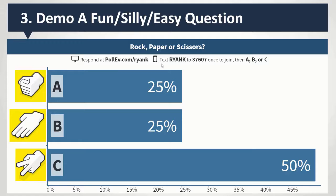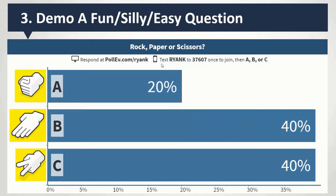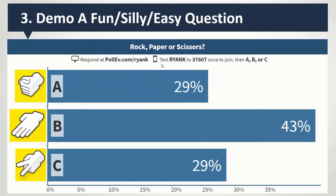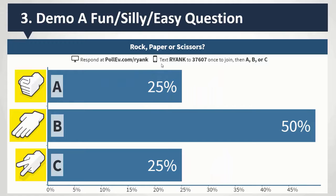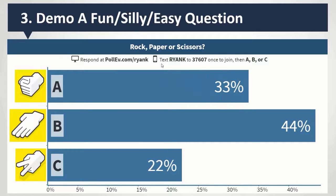Is anyone texting in here? For texting, you have to text Ryan K to 37607, and then you have to also text A, B, or C to answer. You send one message to join Ryan's session, and then you send a second message to actually answer. You only have to join once per session or per semester, depending. Most students will download the app after the first time they use it, and if they have an app, it'll save their instructors' websites and groups.